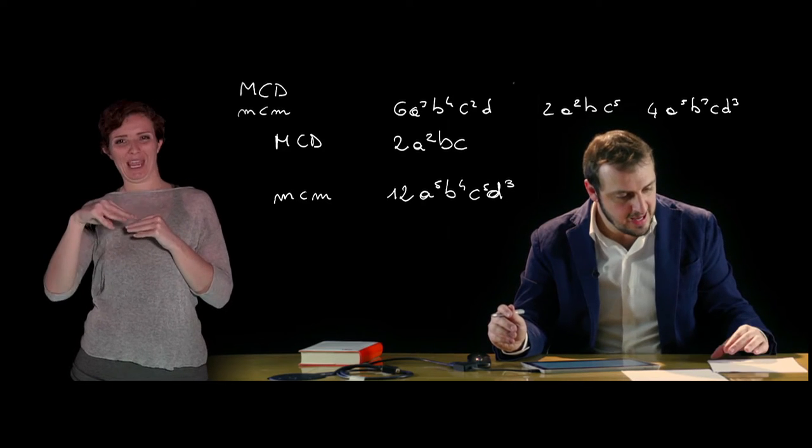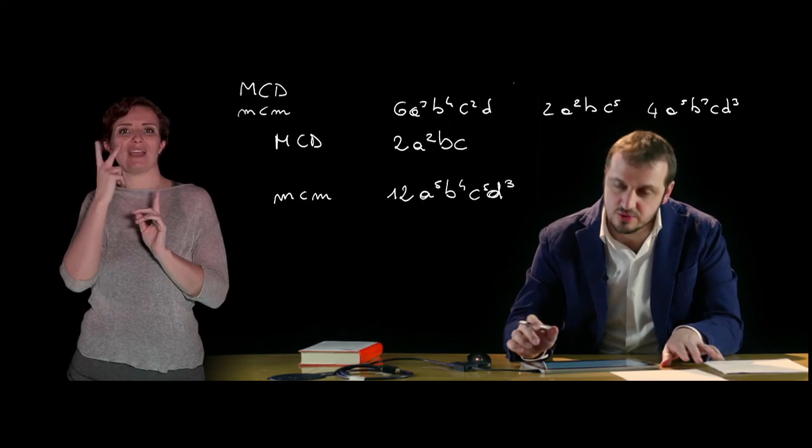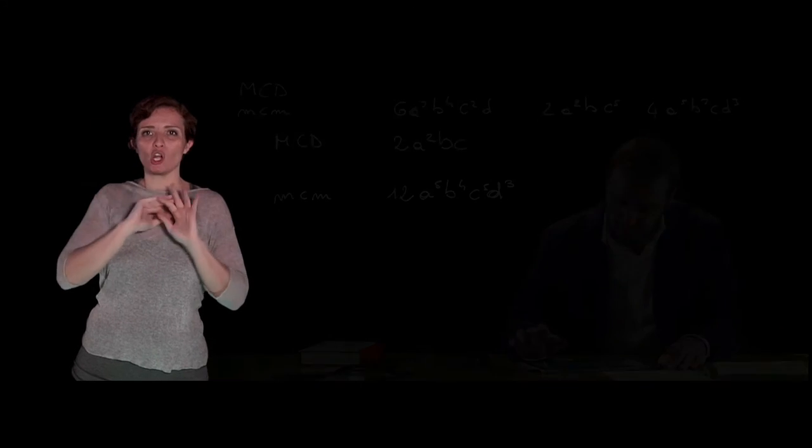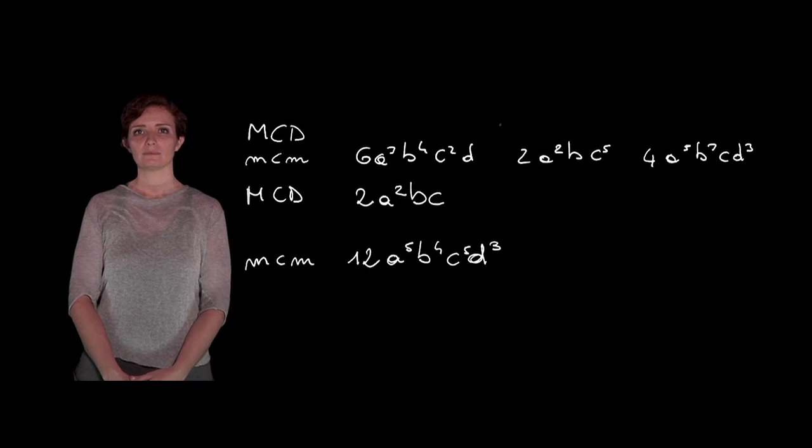Questi sono concetti fondamentali che vedremo poi applicati sia alla scomposizione che alle frazioni algebriche e quant'altro. Si passa poi dai monomi ai polinomi. Il polinomio è ogni somma algebrica di due o più monomi. In questo caso il polinomio è possibile che contenga anche dei monomi simili; in questo caso il polinomio si dice non ridotto a forma normale, quindi bisogna addizionare i monomi simili e semplificare il polinomio riducendolo a forma normale.